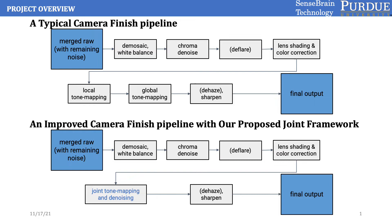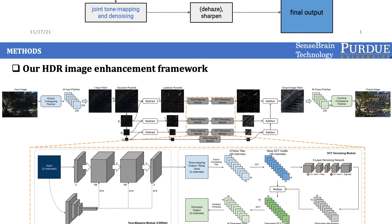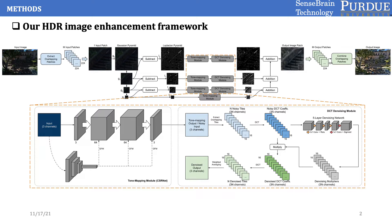Therefore, we propose to perform both local and global tone mapping, as well as removing the remaining noise from previous steps with a single unified model. The bottom figure shows how our joint framework can be used to improve the upper finishing pipeline. This is an overview of our joint image enhancement framework — the upper portion of the figure shows a high-level workflow, while the lower portion shows more details of the tone mapping and denoising modules. Now let's take a closer look at the different components of this joint framework.